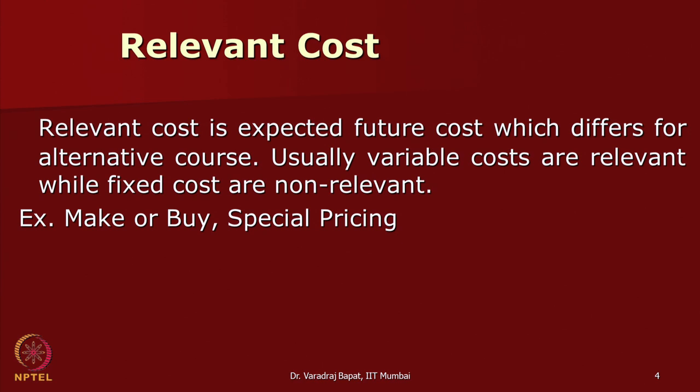Normally variable costs are relevant and fixed costs are not relevant, though this may not be true every time. In a make or buy scenario, what cost will be relevant? Suppose we are producing it ourselves — fixed costs are anyway not going to change, so what matters is the variable cost of manufacture versus the purchase cost. If there is any change in transport cost, we add that to the purchase cost. So we compare the variable cost of making versus the variable cost of buying. Fixed cost is not involved because it is a short term decision and it is not going to change — that is why the variable cost of manufacture is an important relevant cost in a make or buy scenario.